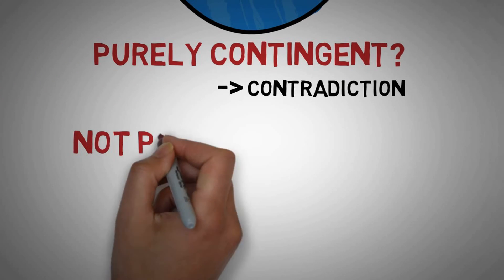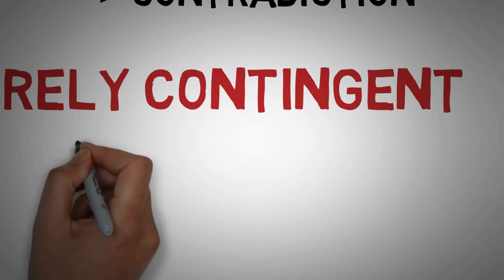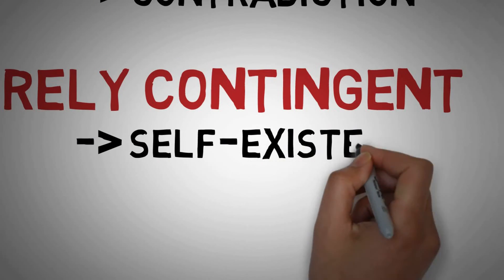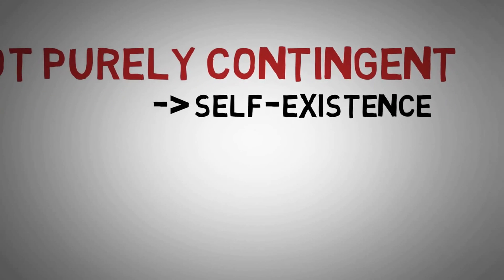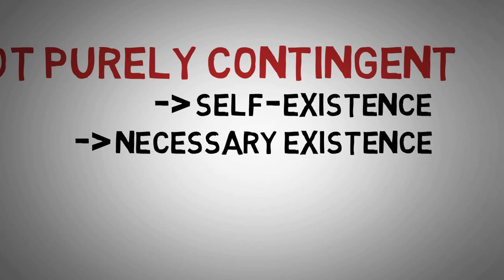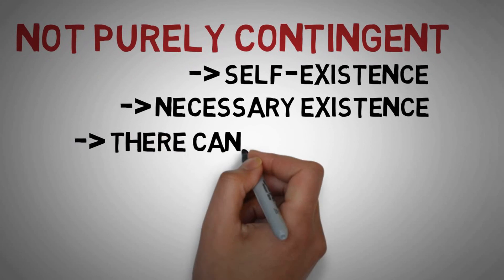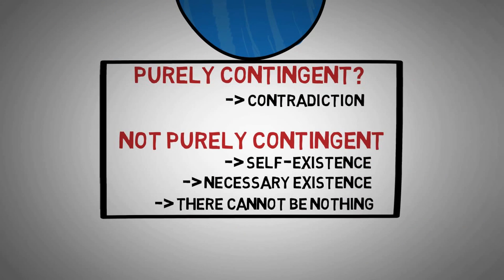So, it follows that Bob is not purely contingent. Therefore, Bob includes a self-existent engine of existence. What that means is that Bob is either necessary itself or contains something that's necessary. In either case, there's something necessary. And that would explain why anything exists at all rather than just nothing. Because there cannot be nothing. Because there's something that cannot not be.